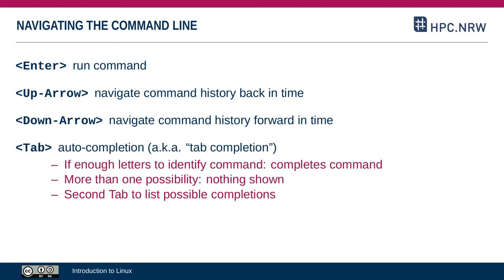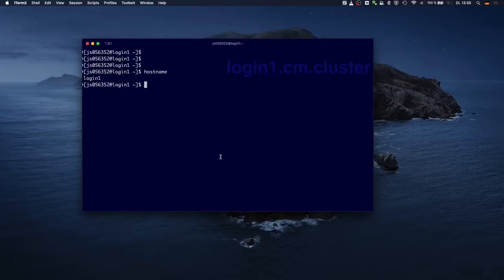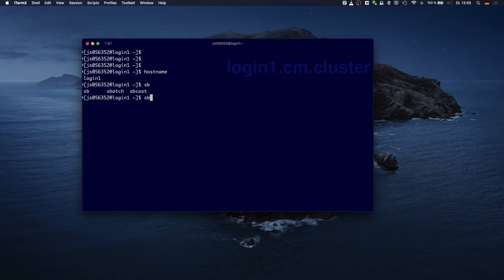There's also a very practical feature called auto-completion, also called tab completion. If you type the first part of a command and Linux knows which command you're trying to type, then you press tab and it will complete the rest of the command for you. If Linux doesn't know what command you mean — for example, there are too many possibilities starting with the same letters — it will show nothing. You can press tab a second time and Linux will show you a list of options. For example, if I type the command sbatch, I can simply type 'sba' since it's unique and pressing tab completes the command. If I were to type only 'sb', the first tab did nothing but the second one showed me three different commands that start with 'sb'.